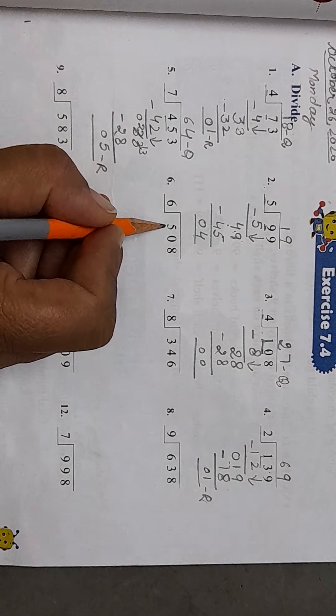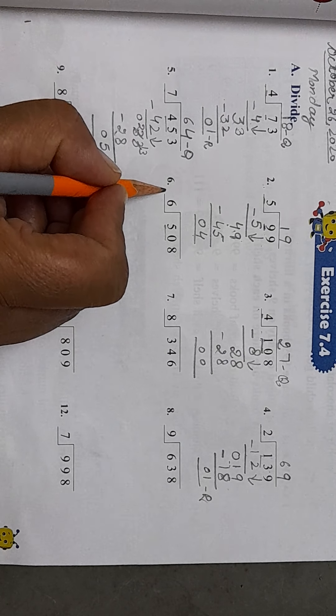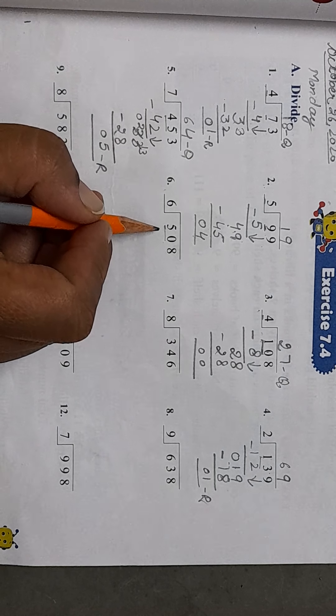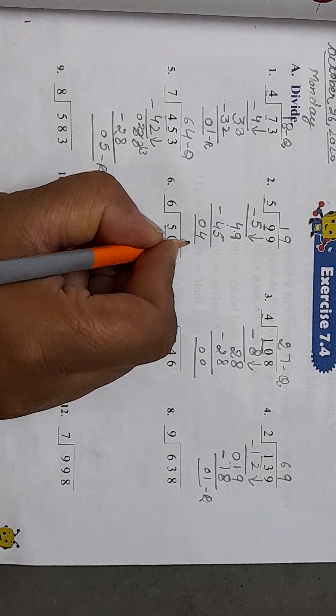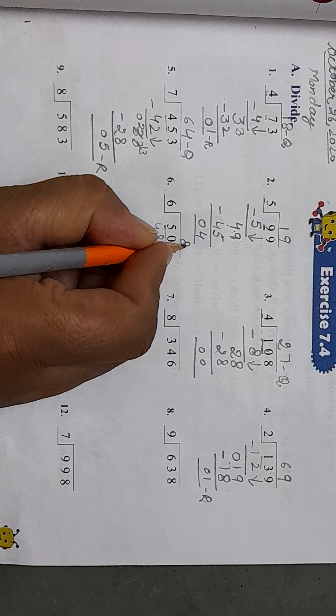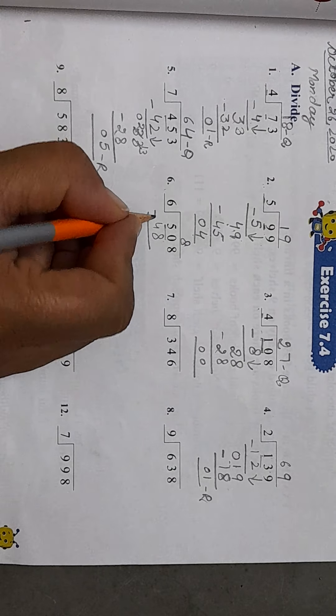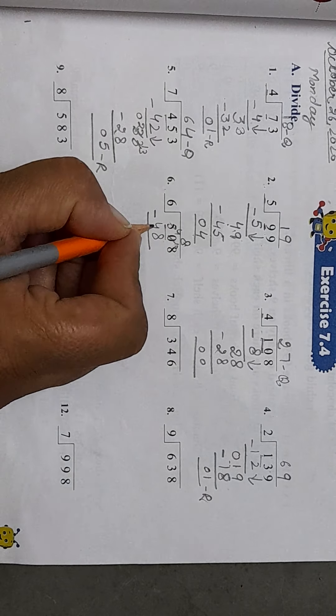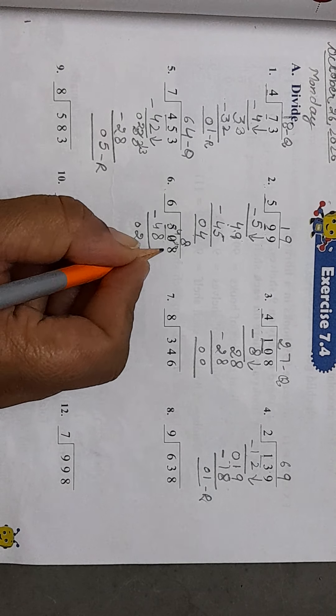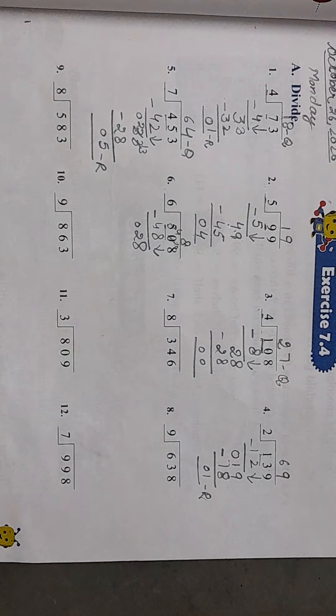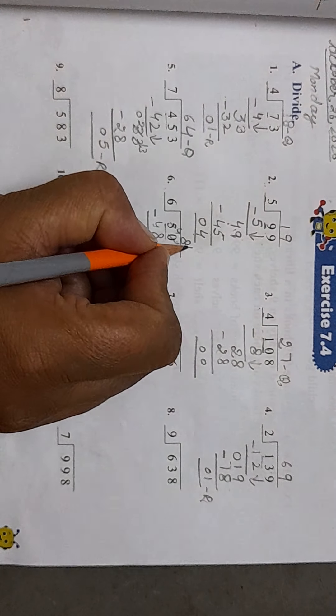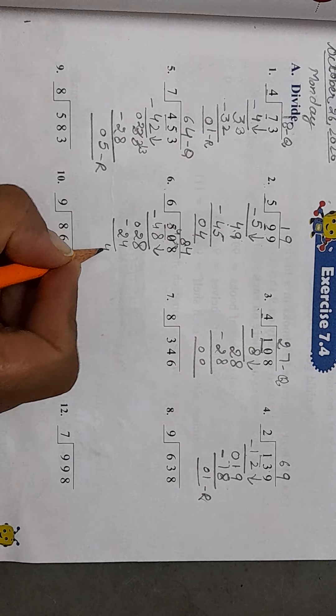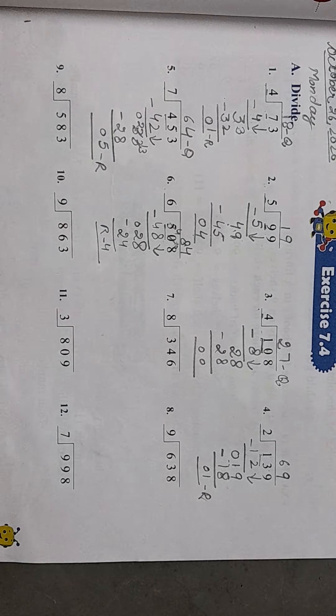The next question is we will take the two numbers because the first number is smaller than the divisor. 50 comes in the table of 6? No. 6 eights are 48. Now 4 minus 4 is 0 and 10 minus 8 is 2. 28. 6 fours are 24. Now 4 is left. So 4 is the remainder here.